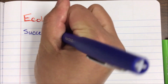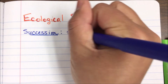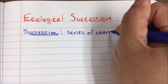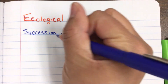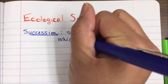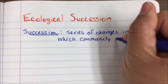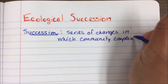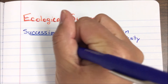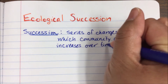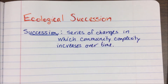The definition for succession is a series of changes in which community complexity increases over time. Essentially what that means is that you have a low biodiversity — you don't have very many species around — and you're going to increase that, increase in numbers.